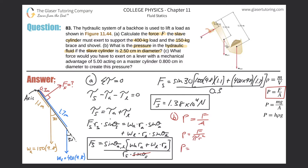Plugging in: pressure equals 1.38 × 10⁴ divided by π times (0.025 / 2)². Converting 2.5 cm to meters gives 0.025 m; divide by 2 for the radius. The result is approximately 2.81 × 10⁷ pascals — since all standard units were used, the answer is in pascals.